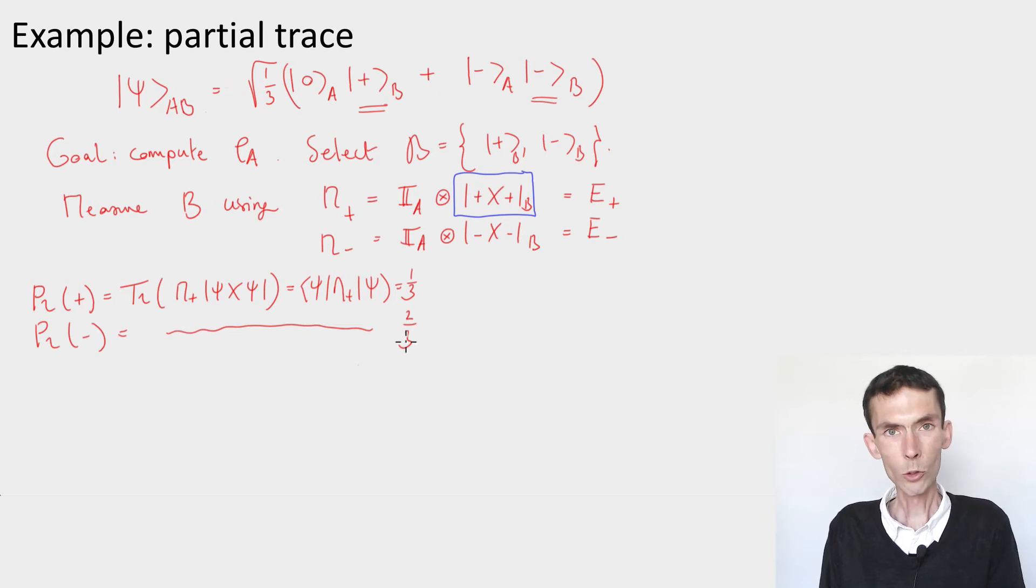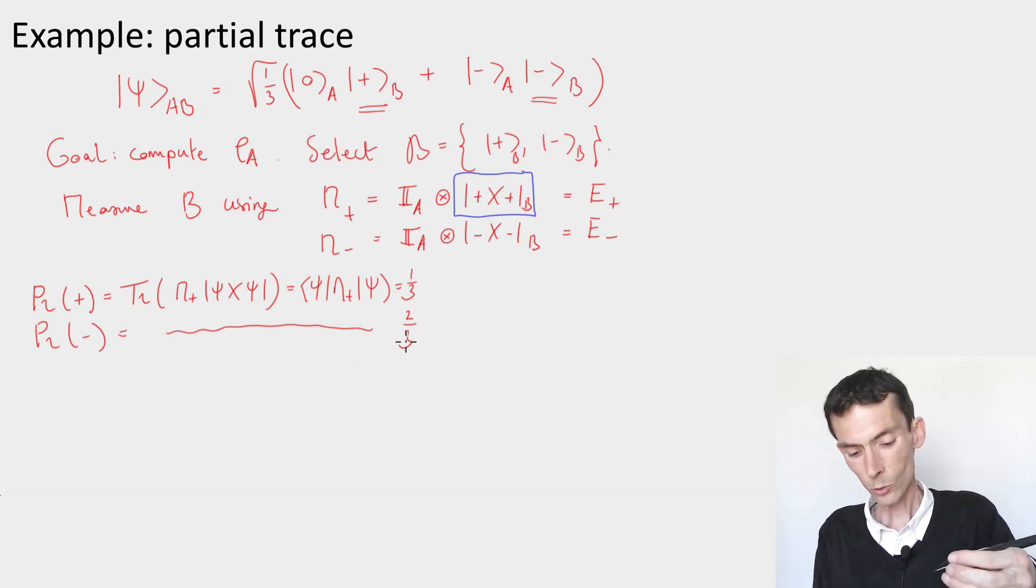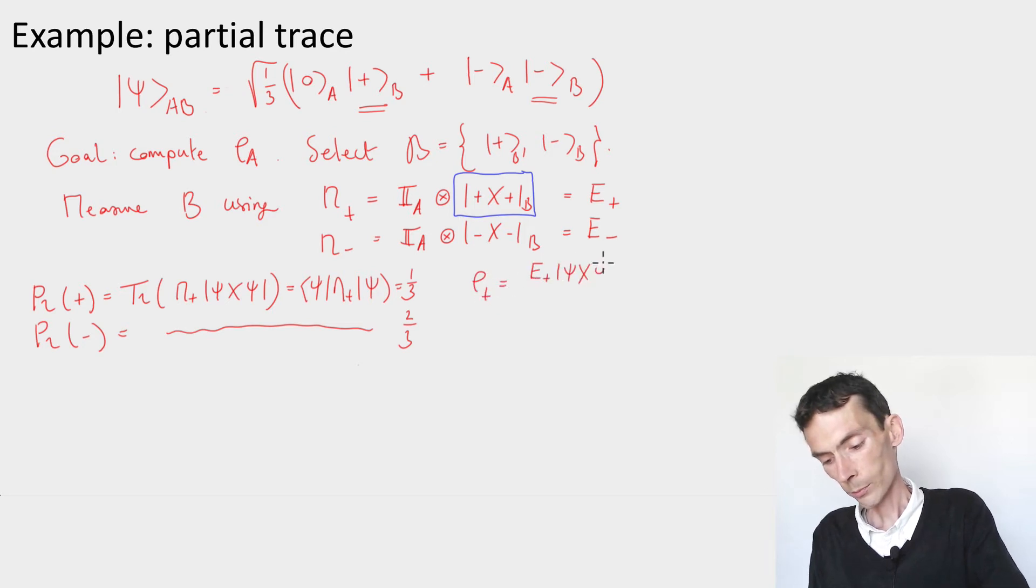And then the next thing we want to do is compute the post-measurement states. So let's compute them. We have the state rho plus, which is equal to E plus psi E plus, divided by the probability of getting a plus, which is one-third.